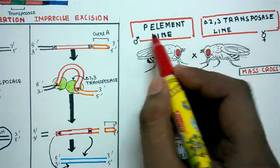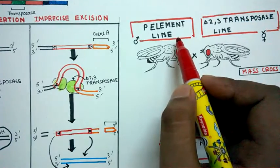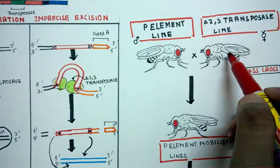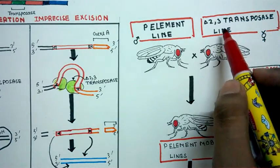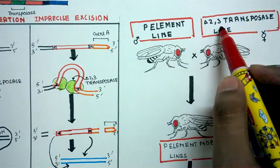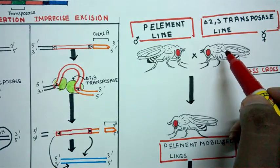On the right-hand side, you can see this fly has a delta 2,3 transposase. And why delta 2,3? Because whatever transposase this fly has, it's actually defective.